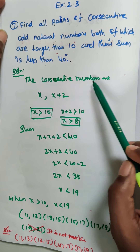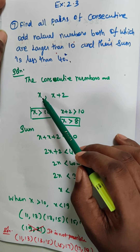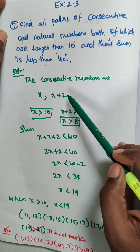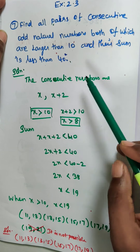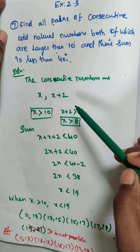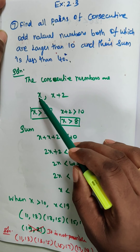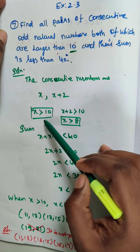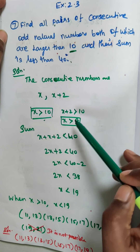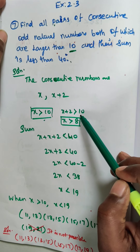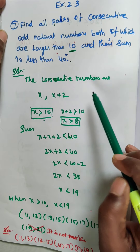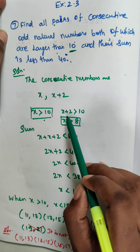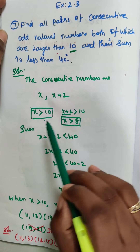For the consecutive odd numbers, I am going to take x and x plus 2. So the first condition is that x is greater than 10, and their sum is less than 40. The consecutive terms x and x plus 2 are both greater than 10.